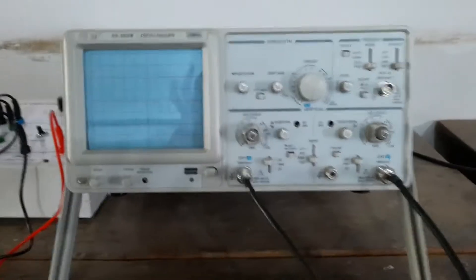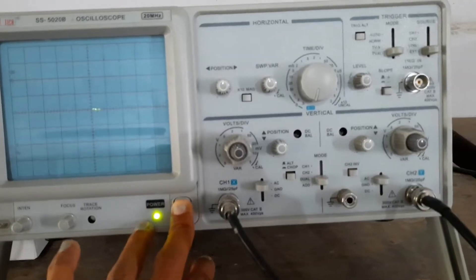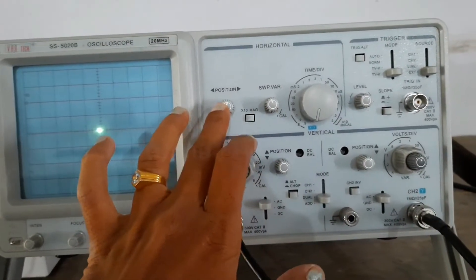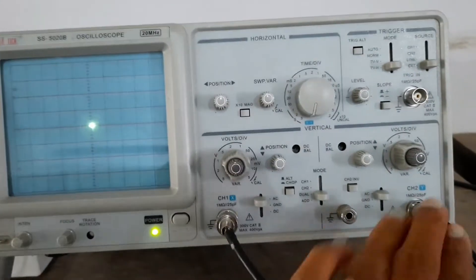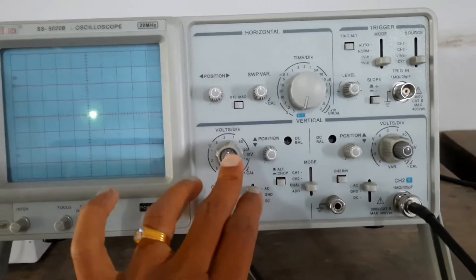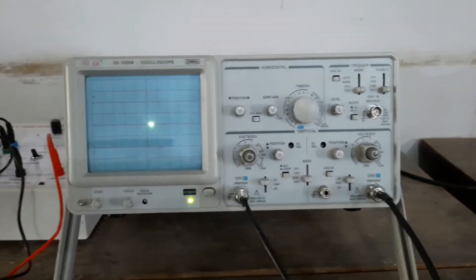First we should know the parts of this CRO. This is the main switch power on button. And these are the knobs used to adjust the position, vertical and horizontal movements. This is the knob used to measure the voltage across channel 1 and channel 2. There are two channels.